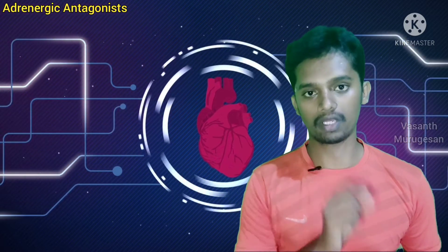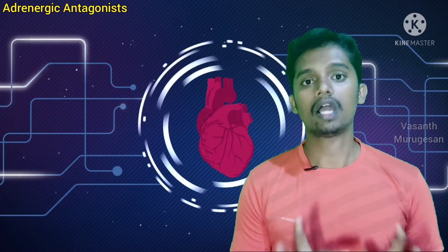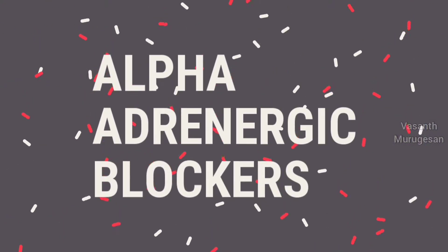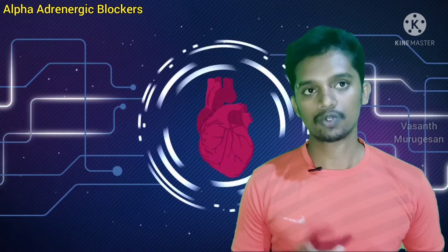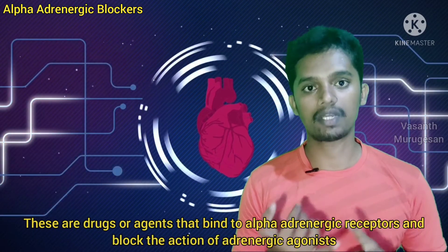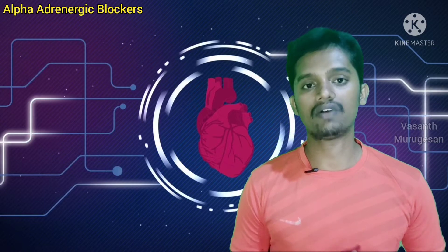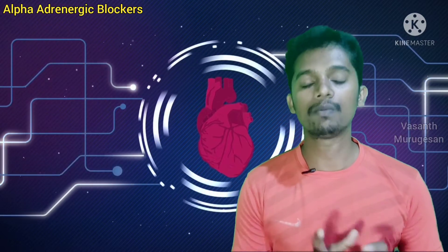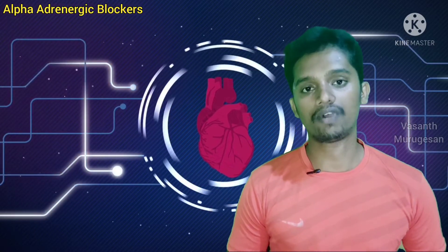Now we will talk about Alpha Adrenergic Receptor Blockers, also called Alpha Adrenergic Antagonists. These are drugs that bind to either Alpha 1 or Alpha 2 receptors and prevent the action of adrenergic agonists, thereby blocking that action. These are Alpha Adrenergic Blockers and Alpha Receptor Antagonists.